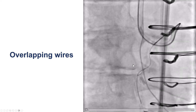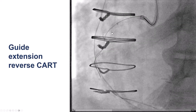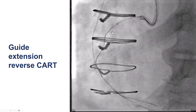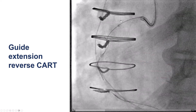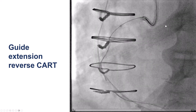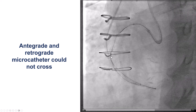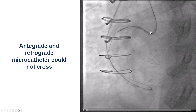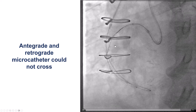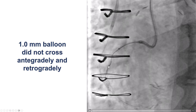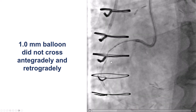We had the antegrade and retrograde wires overlapping, which is a great setup for reverse CART. We tried to advance a guide catheter extension but couldn't go very far because of severe calcification. Eventually we were able to advance the retrograde wire inside the antegrade guide extension. However, we could not cross in either the retrograde or the antegrade direction. We tried a tip-in and attempted to advance an antegrade microcatheter, and then tried a 1.0 mm balloon, but were unable to cross in either direction.